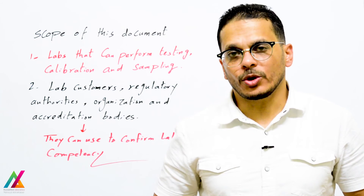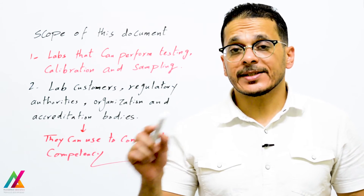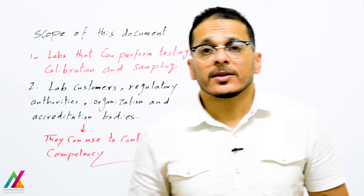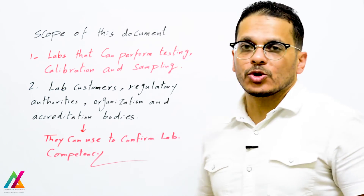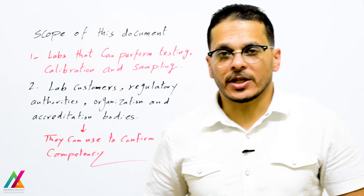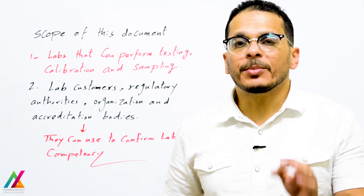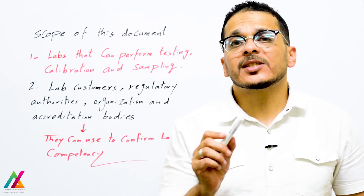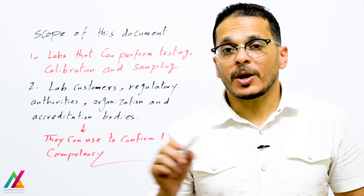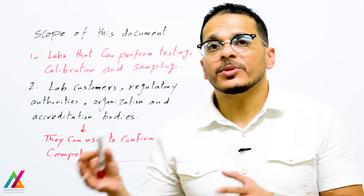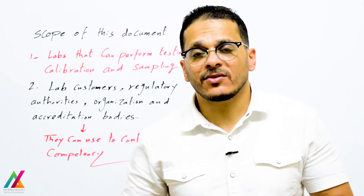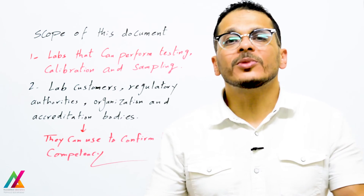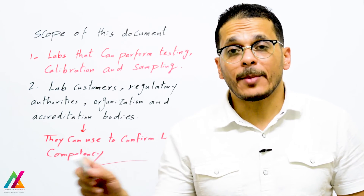Another important point added to this edition is the decision rule, which will be explained in detail in the next lecture and at different points in the process requirements. The scope of this document covers laboratories that perform testing, calibration, and sampling, and specifies requirements relating to competence, impartiality, and other lab operations to ensure they are competent enough to perform activities according to this document and international guidelines.